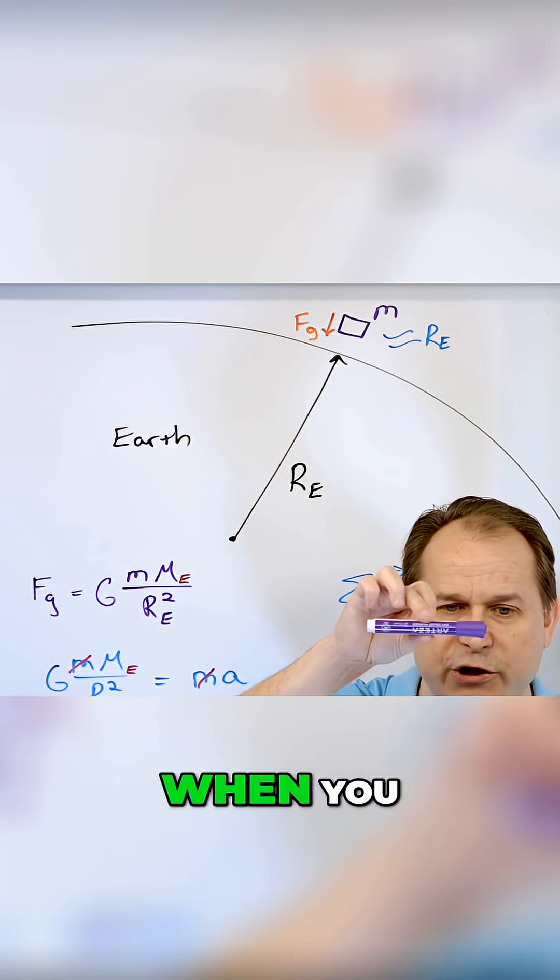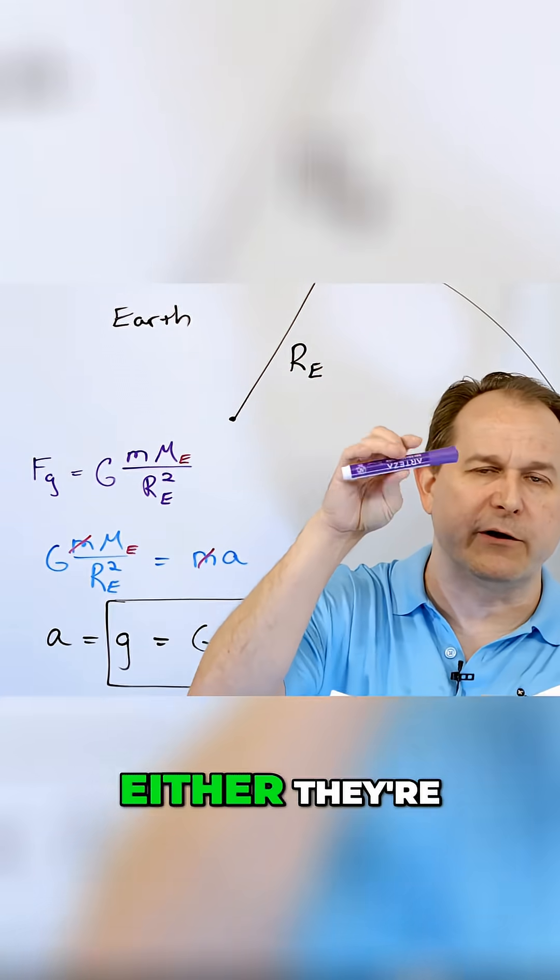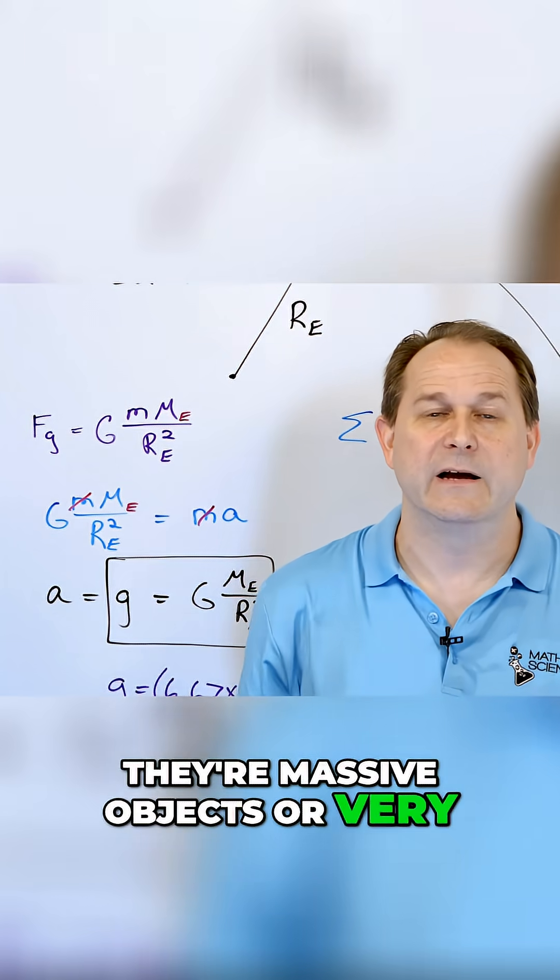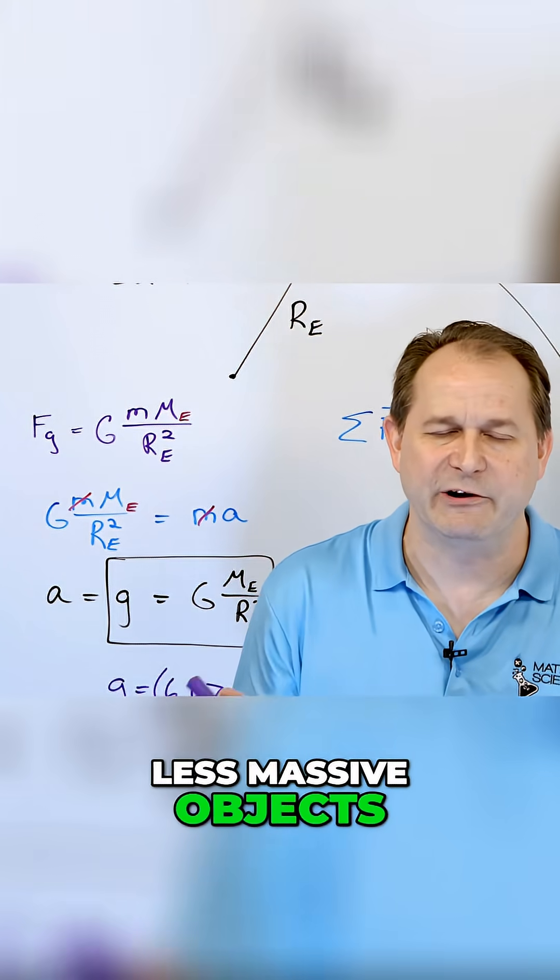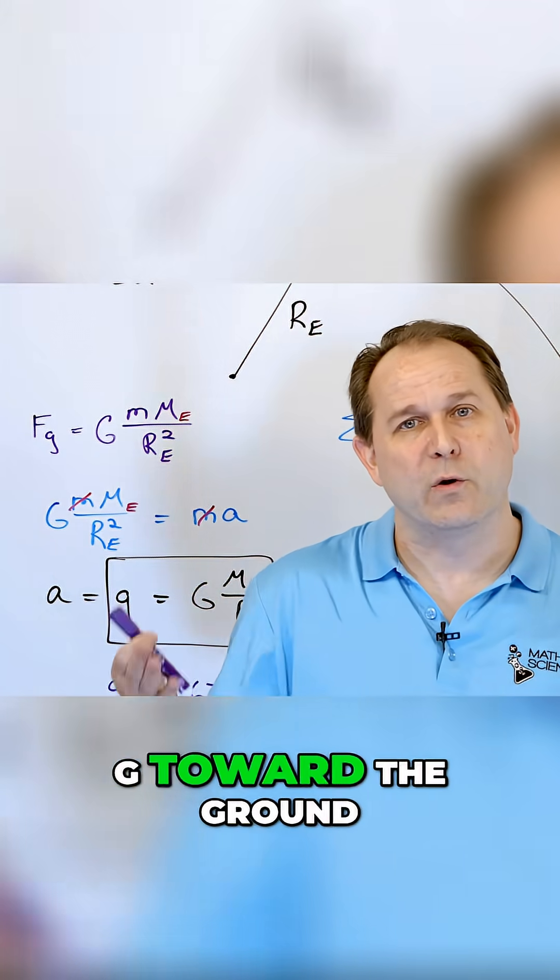All objects, when you do this experiment, either they're massive objects or very less massive objects, they all accelerate at the same rate, G, toward the ground.